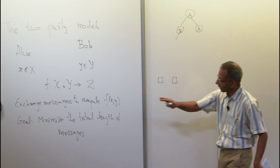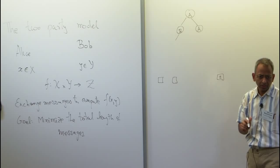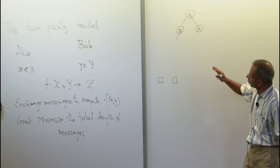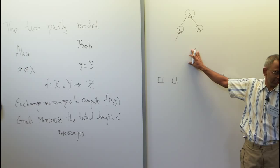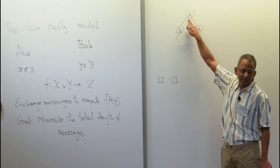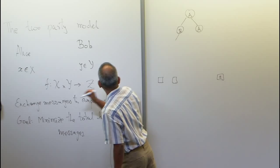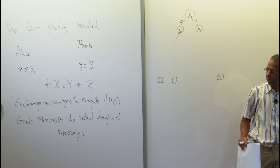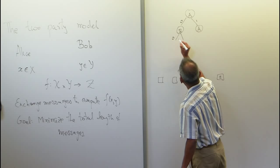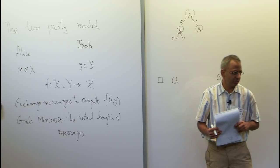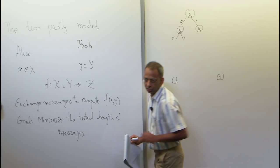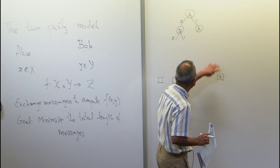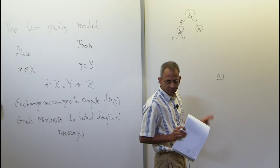Once they have their inputs x and y, they start communicating using bits. Who speaks first and who speaks next is encoded in this tree. Just because there is an A on top, it means Alice starts first. Based on her input x, she either sends a zero or a one. For some inputs she sends a zero, for others a one. If she sends zero, then Bob decides what to do. They continue until they reach a leaf, where the value of the function is stored. At the moment, everything is deterministic, and the protocol is represented as this tree.